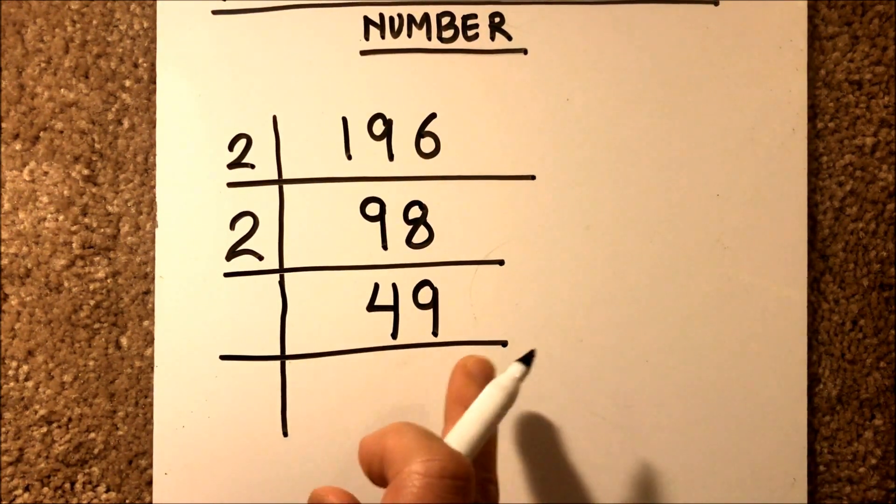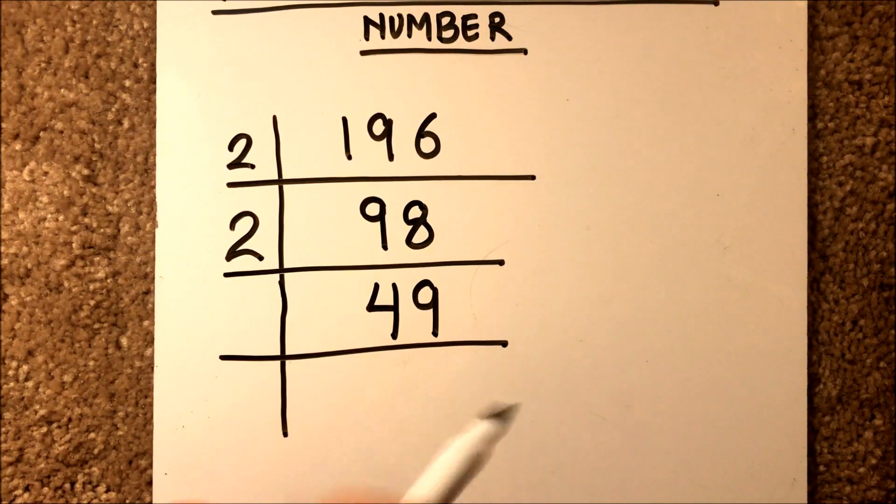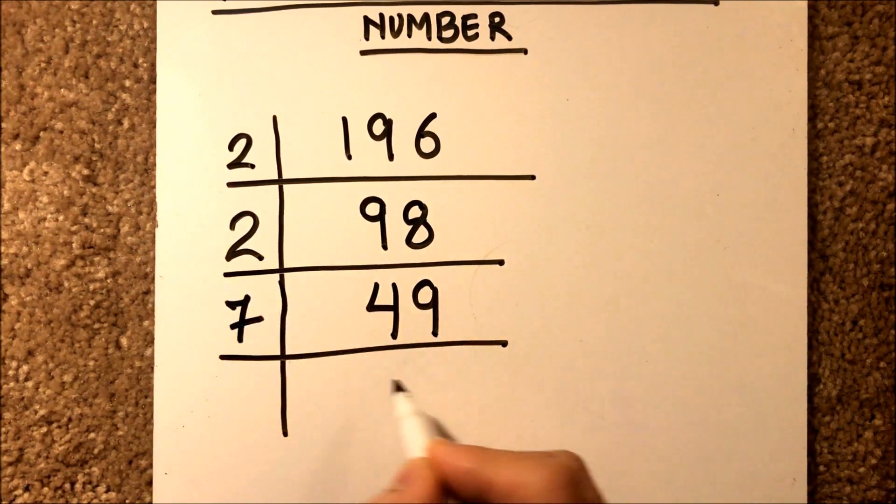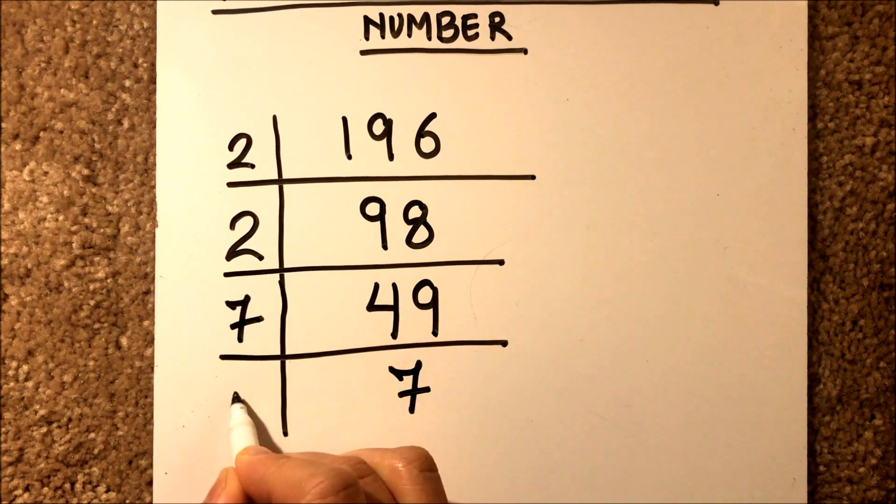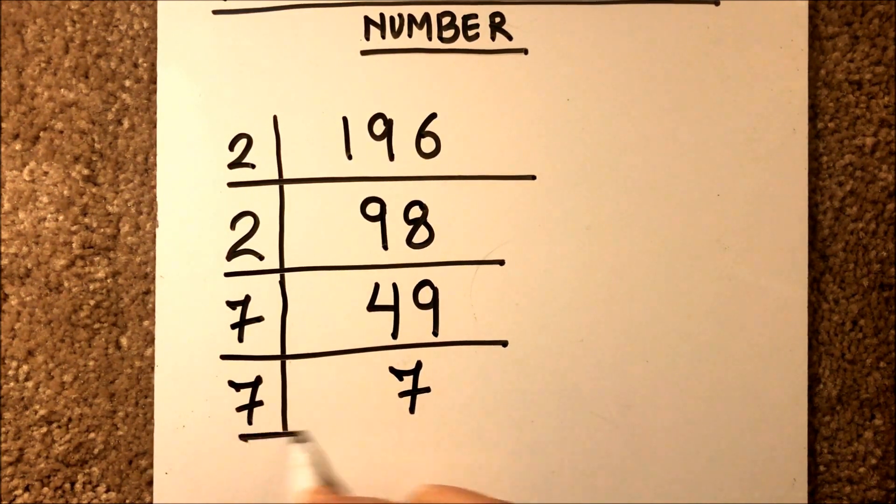Now for the number 49, we have a divisor 7. 7 times 7 is 49, and 7 times 1 is 7.